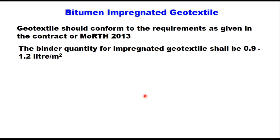For bitumen impregnated geotextiles, the geotextile should confirm the requirements as given in the contract or as per MORTH specification 2013, and the binder quantity for impregnated geotextiles shall be 0.9 to 1.2 liters per m².